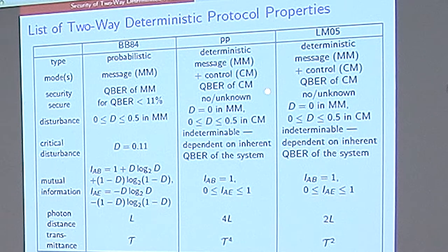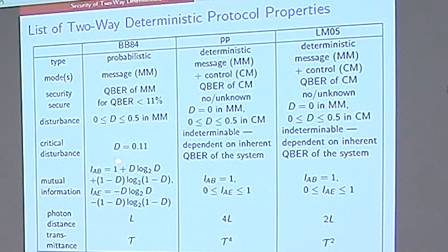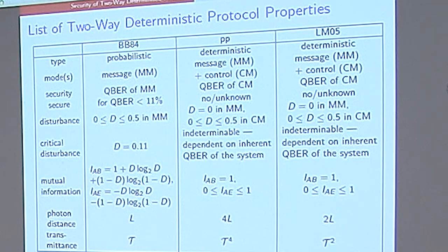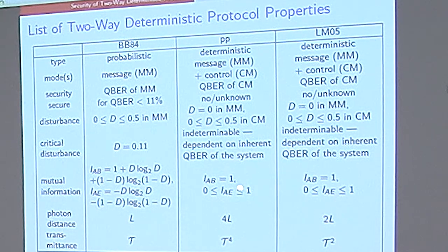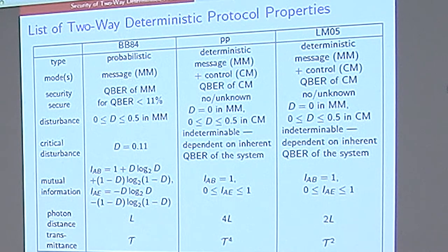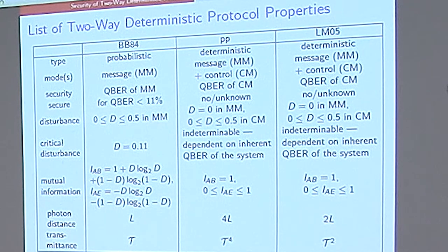We see that we don't have a critical disturbance in the message mode at all. Security is based on the control mode. The disturbance is non-existing in two-way deterministic protocols. Critical disturbance is therefore also not existing. The mutual information between Alice and Bob is 1. The mutual information between Alice and Eve is between 0 and 1, depending on the amount of time Eve chooses to be in the line.